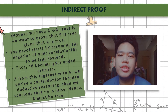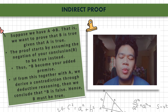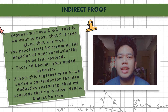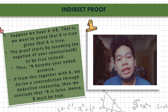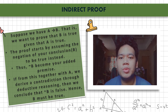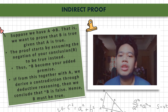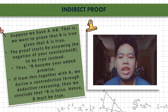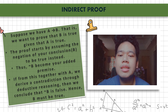Hi, my name is Aristotel Partacio Bukas from BS Math 1 and I'm going to be the last presenter for today. I'm going to teach you about indirect proof. Suppose we have: if A, then B. We want to prove that B is true given that A is true. The proof starts by assuming the negation of your conclusion B — so not B becomes your added premise.